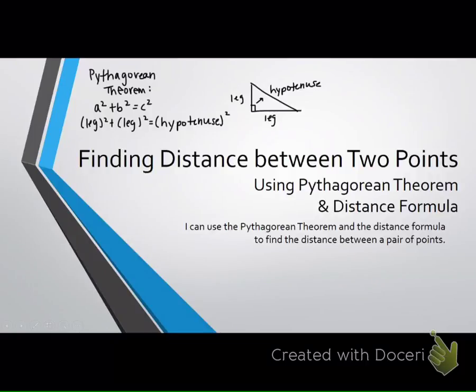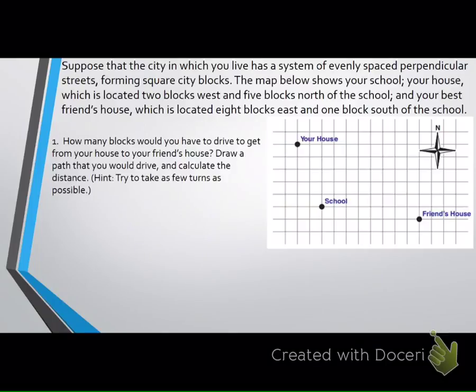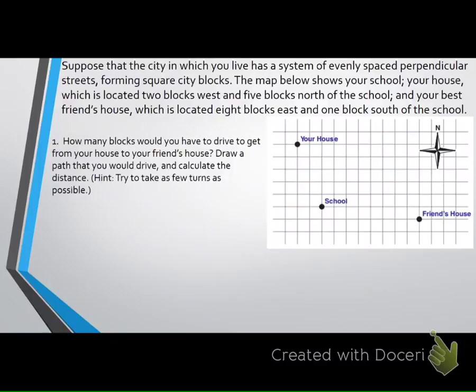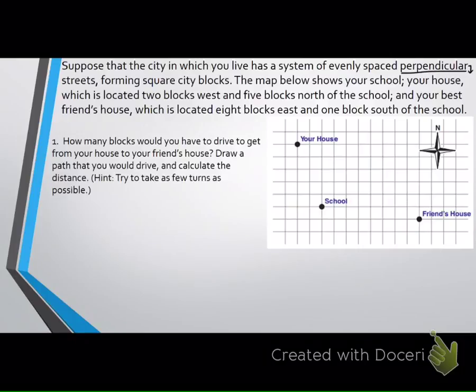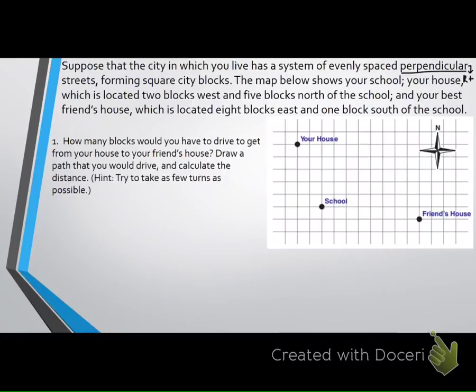Let's look at the next slide together. Suppose that a city in which you live has a system of evenly spaced perpendicular streets. What does perpendicular mean? Not just intersecting. More detail than that. They do intersect, but at what? A right angle. So when you think perpendicular, they intersect at a right angle. It's more than just intersecting. Suppose that a city in which you live has a system of evenly spaced perpendicular streets forming square city blocks.